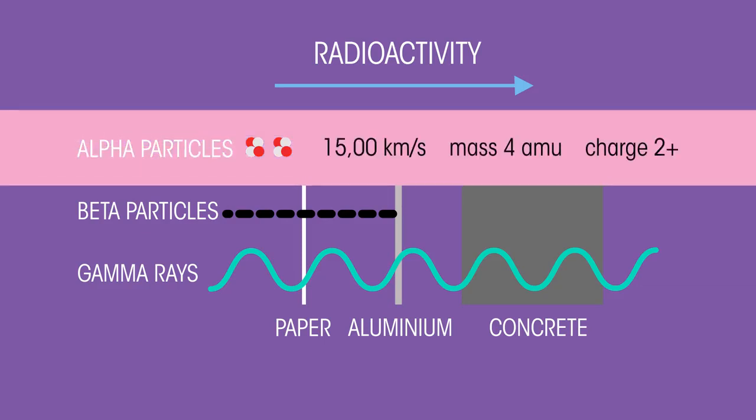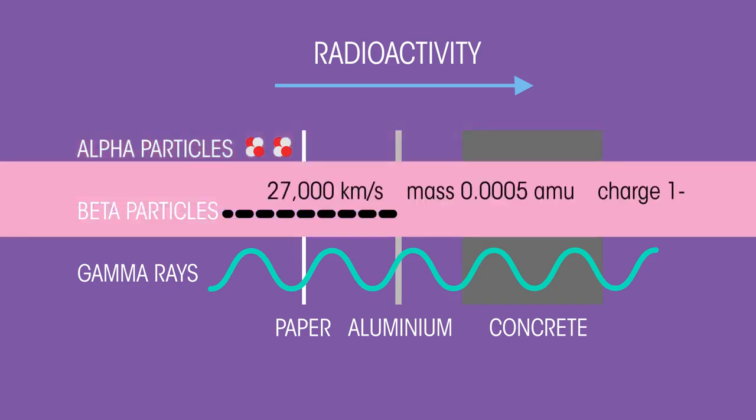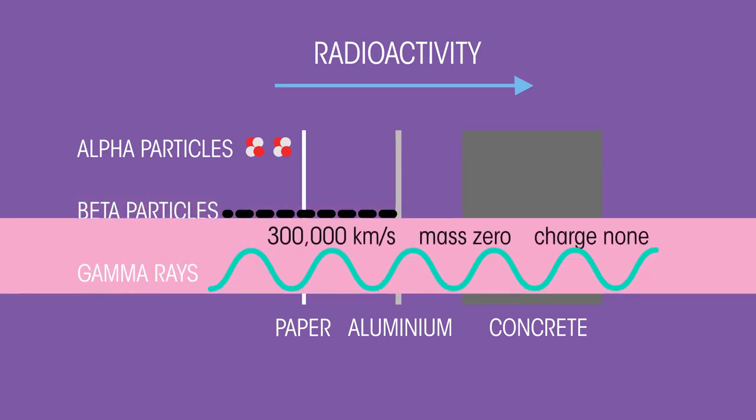Alpha is a slow-moving helium nucleus made of two protons and two neutrons with a double positive charge. Beta is a very fast-moving electron with a single negative charge. And gamma radiation is electromagnetic, like radio waves, light, and x-rays, but is much more energetic.